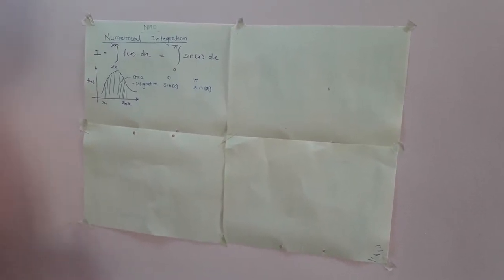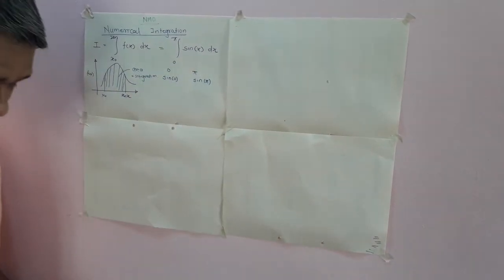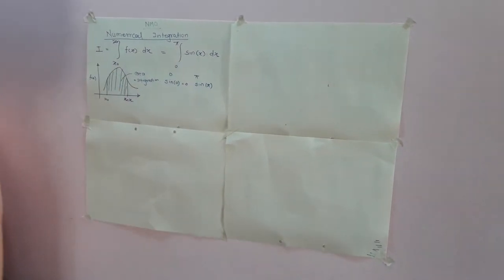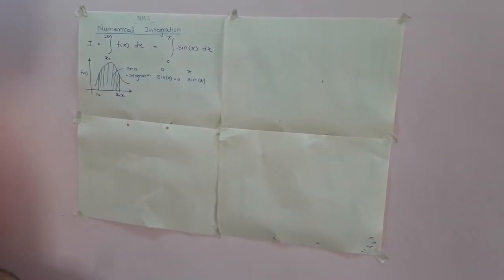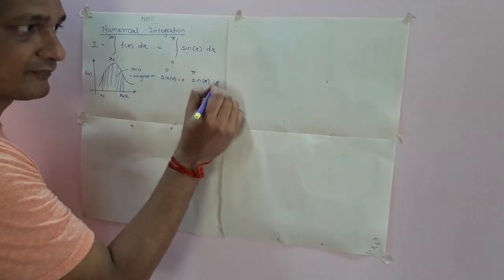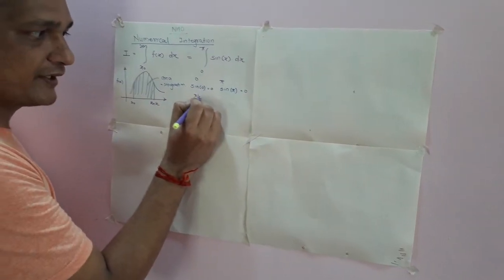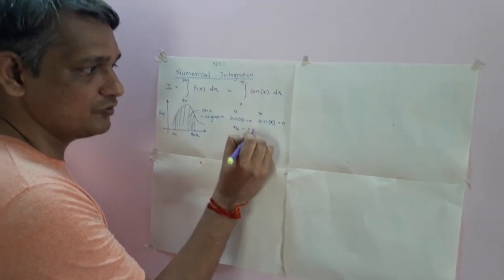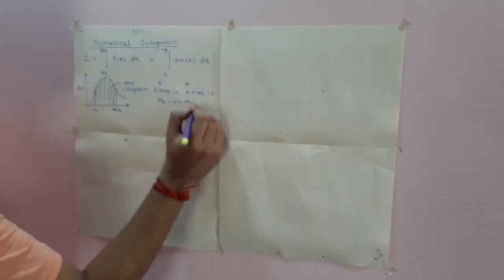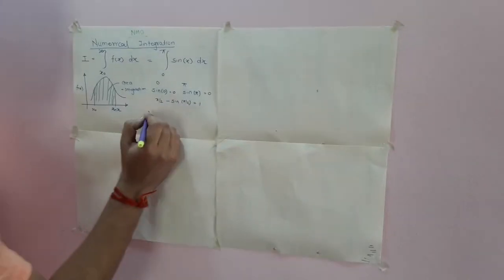Always remember: in our subject of numerical methods and optimization, your calculator should be in the radian mode. Calculate sin(0) — the answer is 0. And sin(π) is also 0. Now evaluate sin(π/2). π means 180 degrees, so π/2 means 90 degrees. Sin(π/2) is equal to 1.